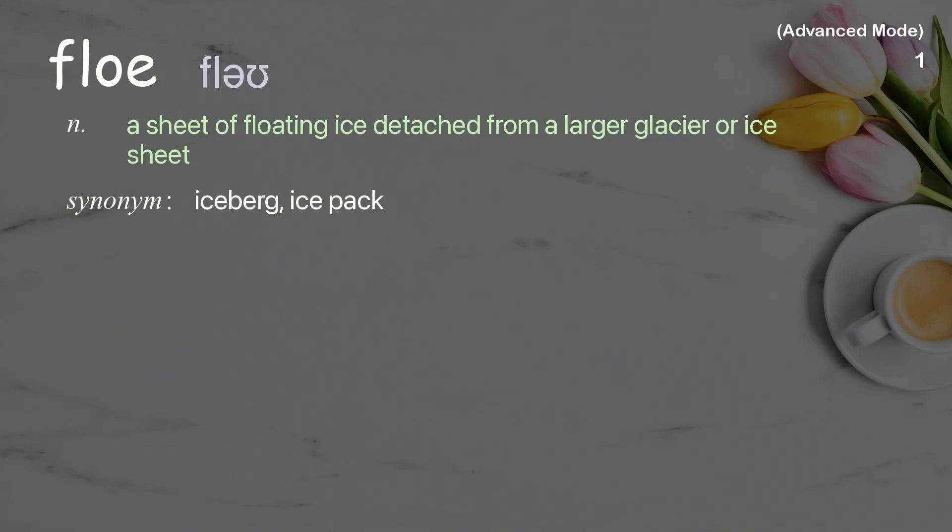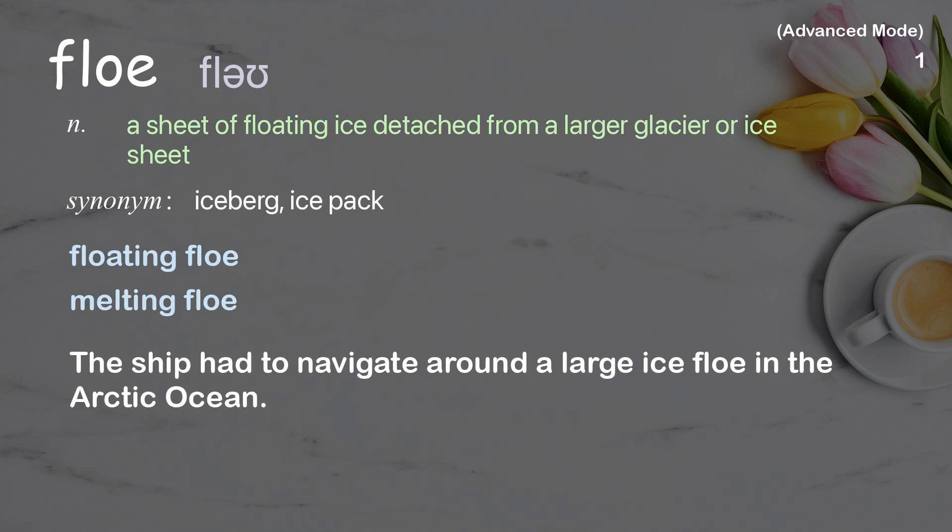Flow: A sheet of floating ice detached from a larger glacier or ice sheet. Examples: floating flow, melting flow. The ship had to navigate around a large ice flow in the Arctic Ocean.